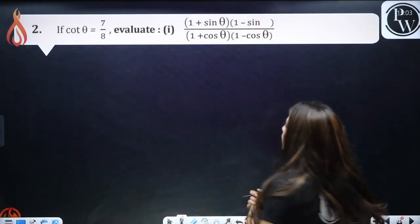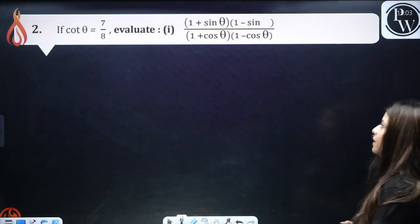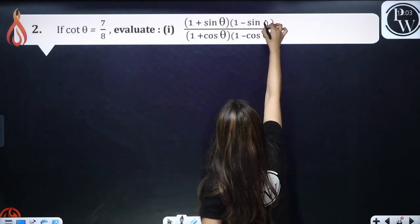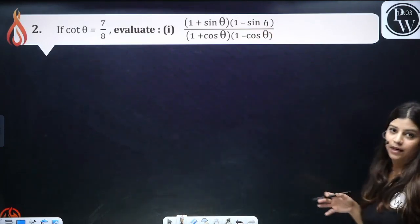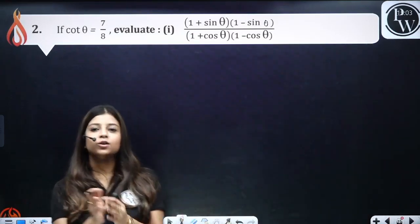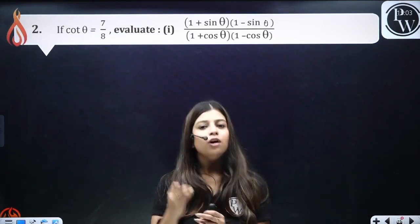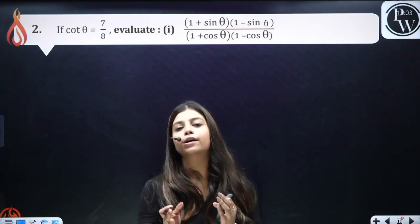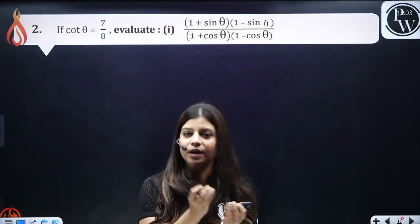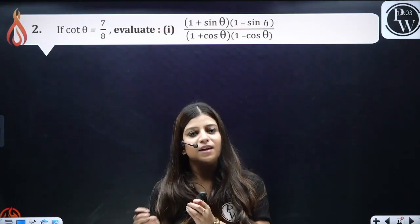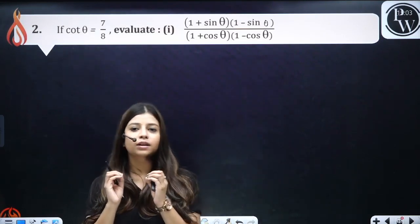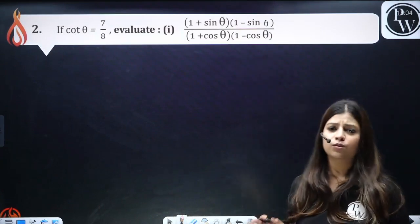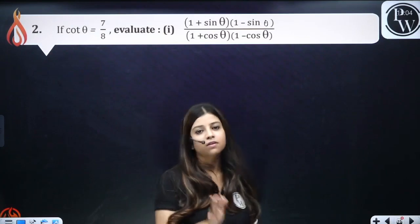Question: If cot theta equals 7/8, evaluate (1 + sin θ)(1 − sin θ) upon (1 + cos θ)(1 − cos θ). There are multiple methods to solve a trigonometry question. There is no one fixed solution — as long as all identities and operations applied are correct. You can choose any method, given that it is correct in its form.